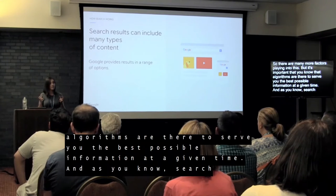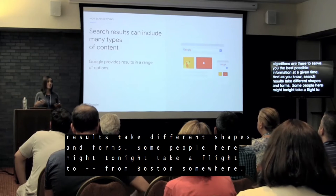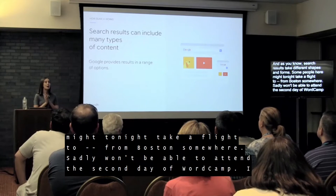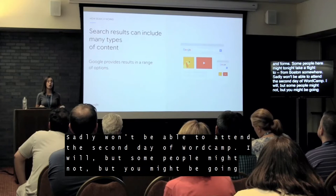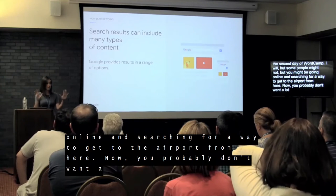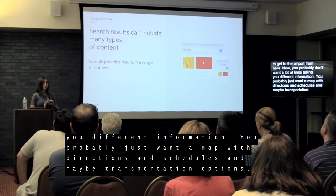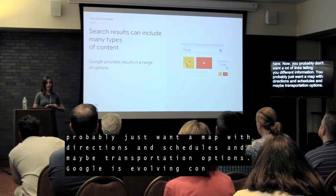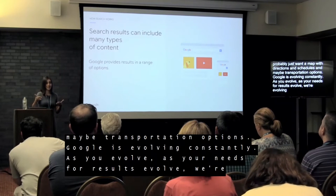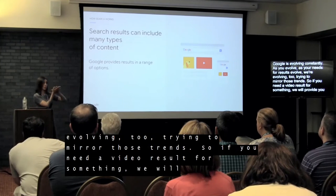As you know, search results take different shapes and forms. If you're searching for a way to get to the airport, you probably don't want a list of links — you want a map with directions, schedules, and transportation options. Google is evolving constantly. As your needs for results evolve, we're evolving too, trying to mirror those trends. If you need a video result, we will provide a video result, not just a list of links.